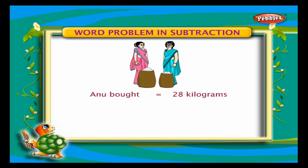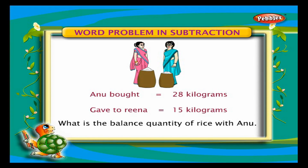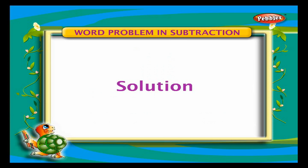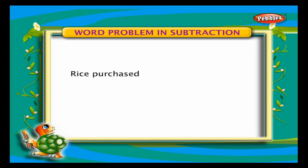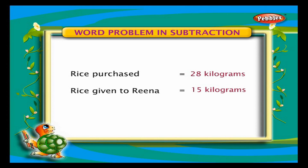Word problem — Subtraction: Anu bought 28 kilograms of rice. She gave Rena 15 kilograms of rice. What is the balance quantity of rice with Anu? Solution: Rice purchased = 28 kg. Rice given to Rena = 15 kg. Subtract ones: 8 minus 5 is 3. Subtract tens: 2 minus 1 is 1. The balance quantity of rice with Anu is 13 kilograms.